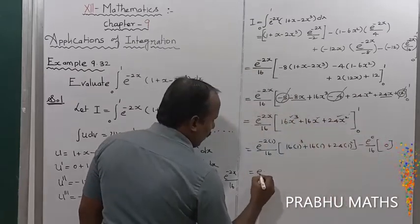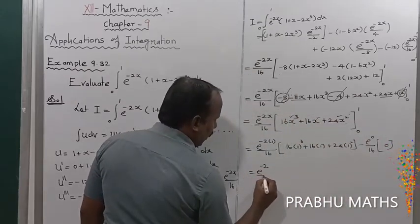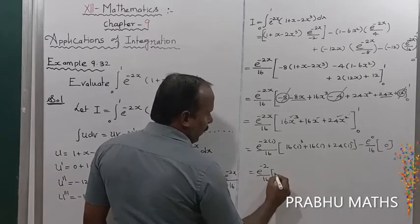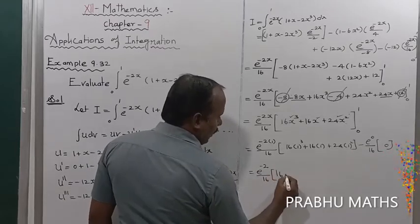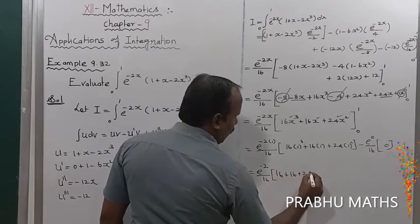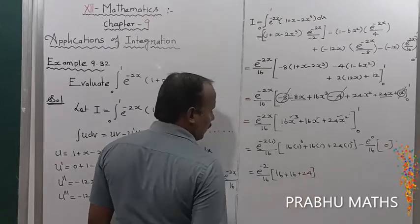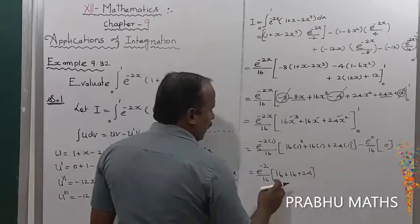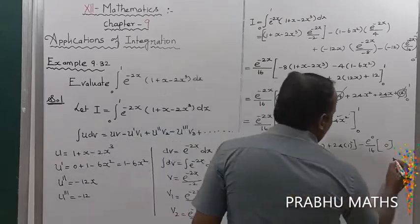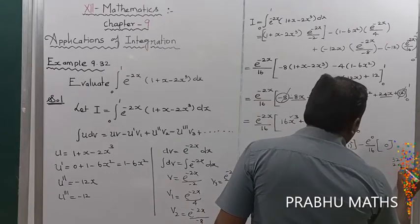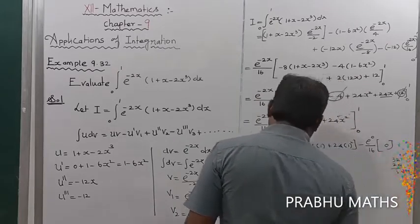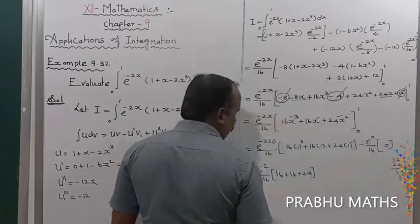So we get e^(-2)/16 into (16 + 24) = e^(-2)/16 into 40... simplifying: 16 + 16 + 24 = 56. So the result is e^(-2)/16 into 56.